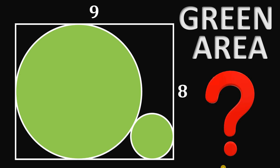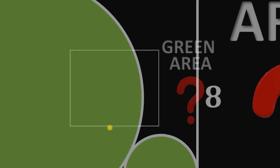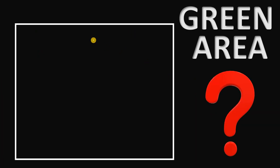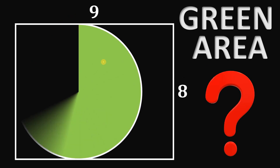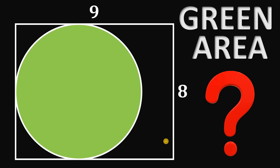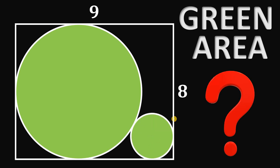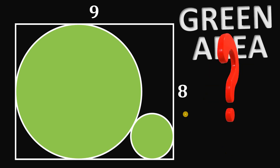Today we will answer a geometry challenge given by one of our followers, created by Master Marvin Kalangan. We have a rectangle with dimensions of 9 by 8 units. We draw a circle tangent to three sides of this rectangle, then a small circle tangent to two sides of the rectangle and tangent to the bigger circle. The question is: what is the total measure of the green area?